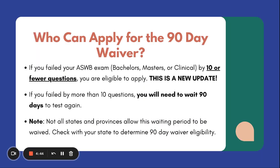So getting to the exciting information — who can apply for the 90-day waiver? If you failed your ASWB exam at the bachelor, masters, or clinical level by 10 or fewer questions, you are eligible to apply. If you were within 14 or 15 questions, you're not eligible. If you are anywhere between one question and 10 questions, you are eligible to apply. This is a new update — it used to be only five questions, so they have expanded the range. Ten or fewer questions, you are now eligible to apply.